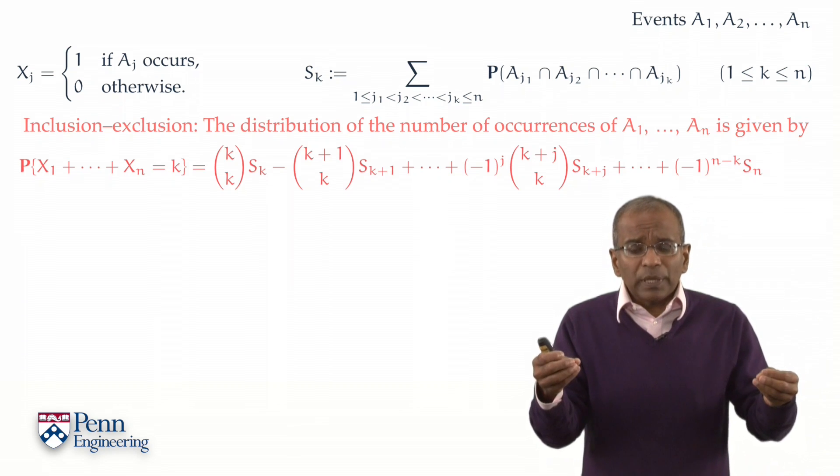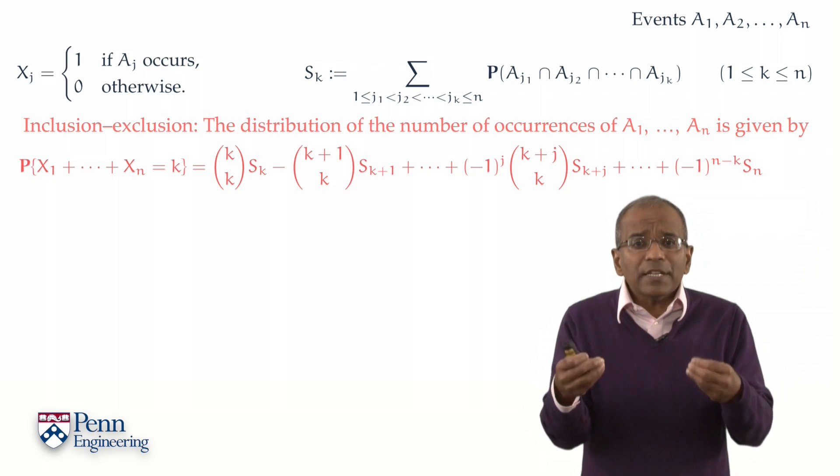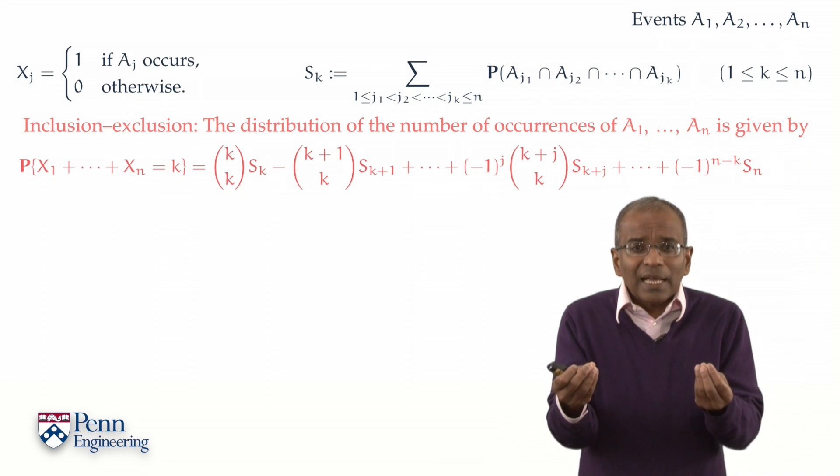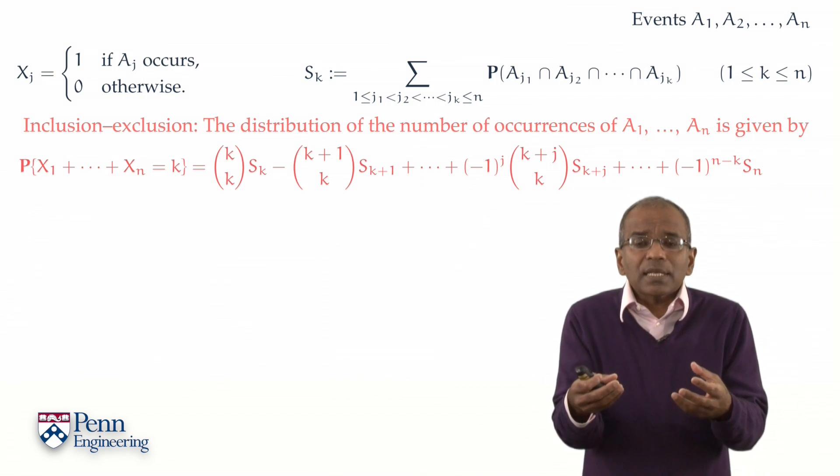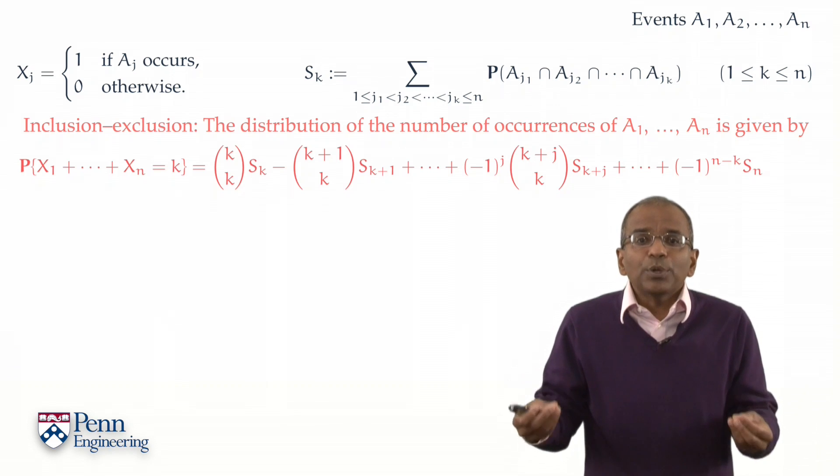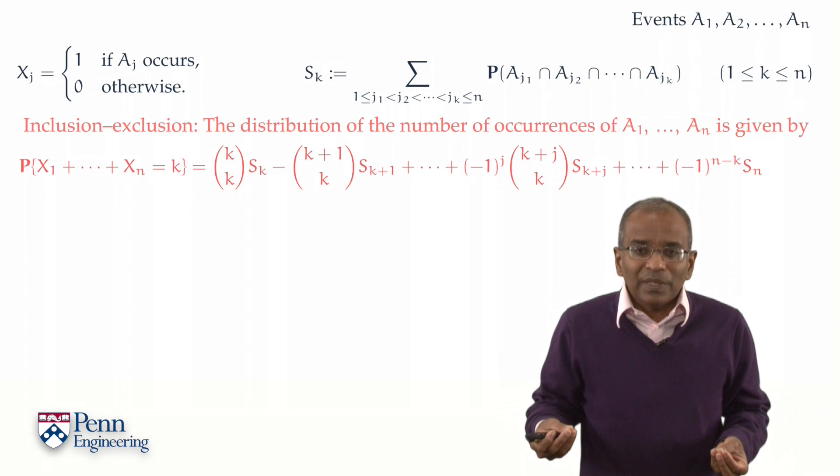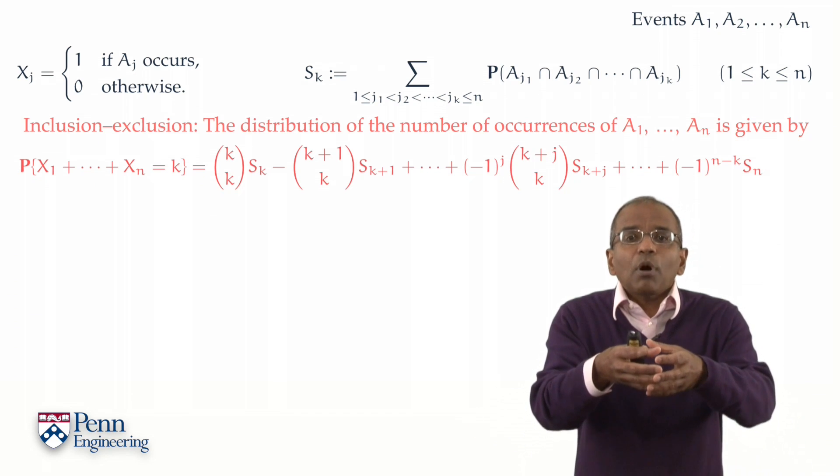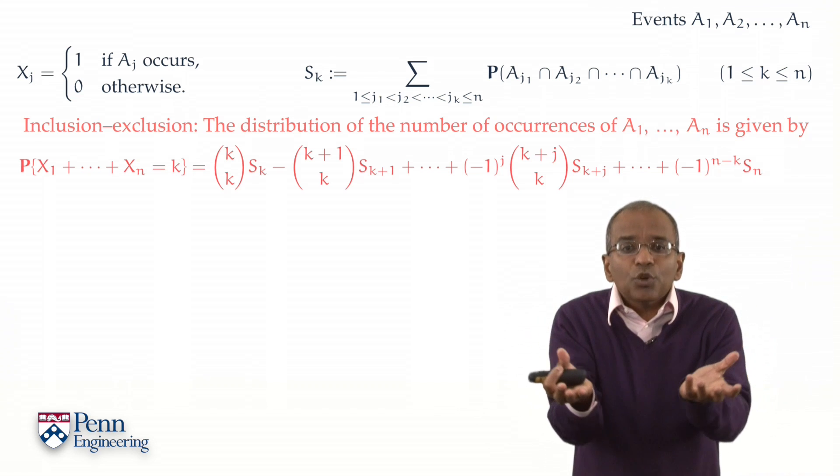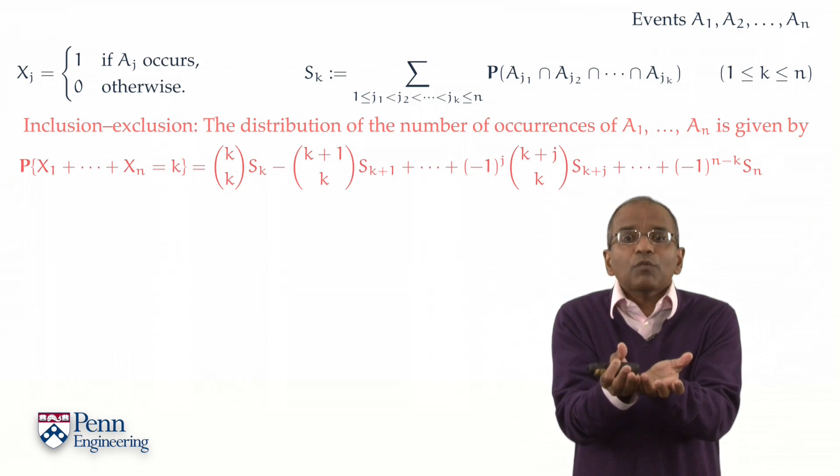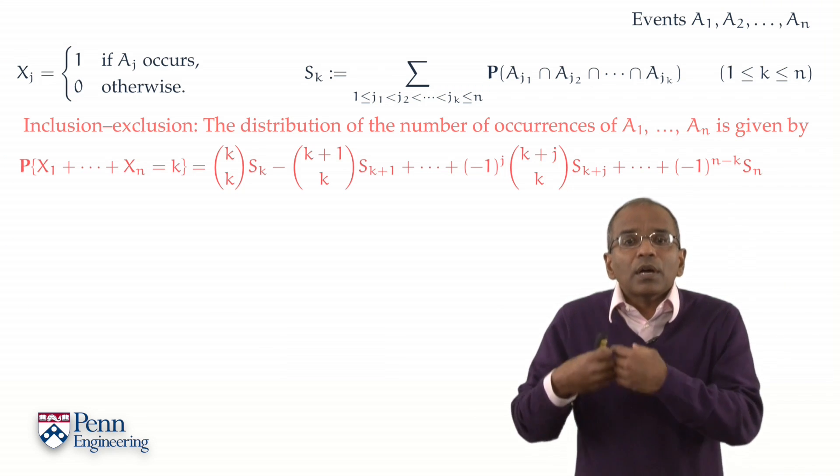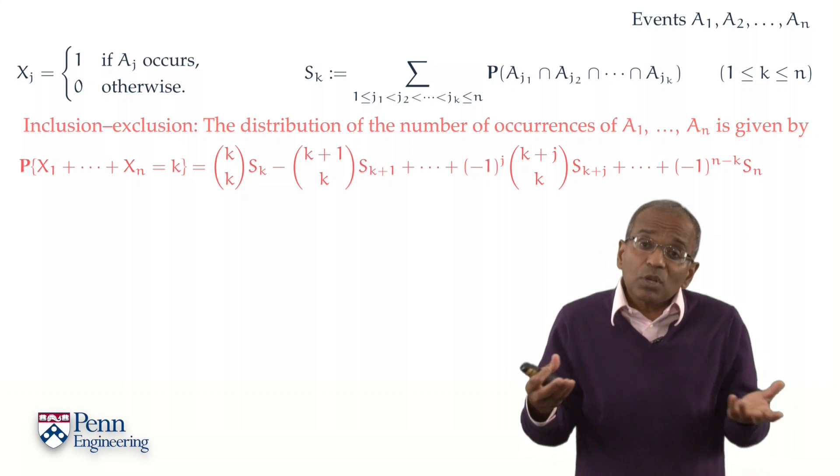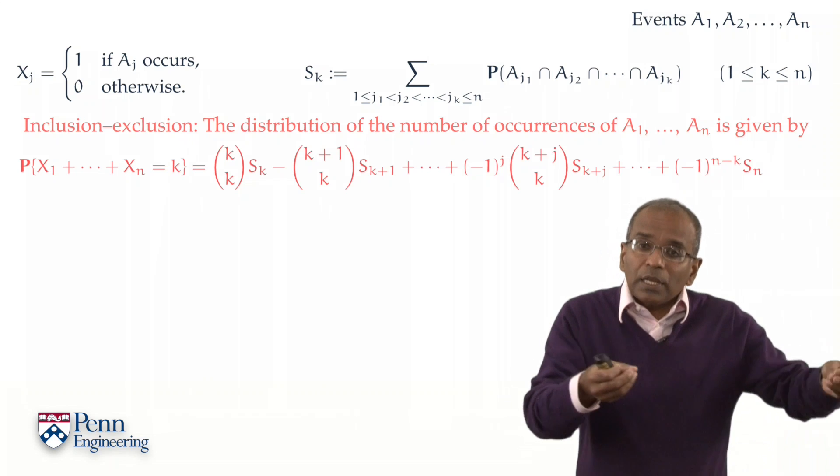The high-level principle here is this. If it turns out that intersection probabilities are relatively easy to compute in the problem, then these probabilities for the distribution for the number of occurrences of these events is now readily computable, perhaps not in closed form but at least numerically computable.